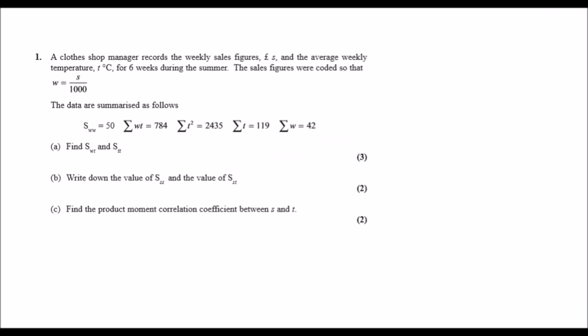And here we go guys, the very first question of the S1 June 2017 paper. So it states that a clothes shop manager records the weekly sales figures £S and the average weekly temperature T degrees Celsius for six weeks during the summer.